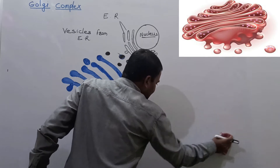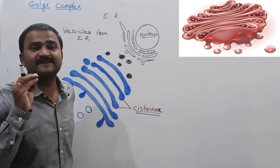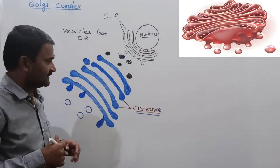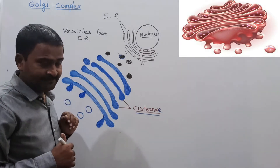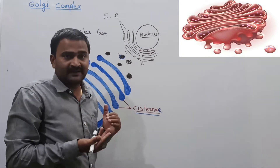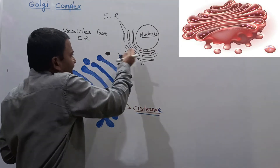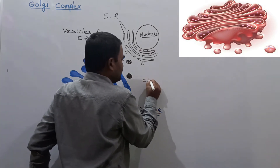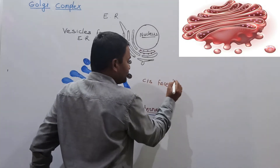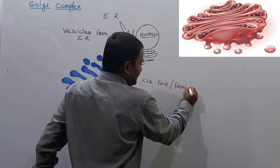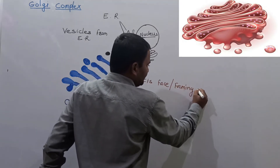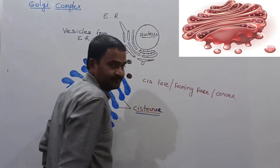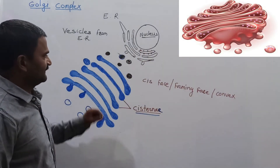In the cytoplasm, the cisterni of the Golgi complex are placed in a specific orientation. The entire Golgi apparatus has two sites or faces. One face is called the cis face, also called the forming face. This forming face is generally convex.